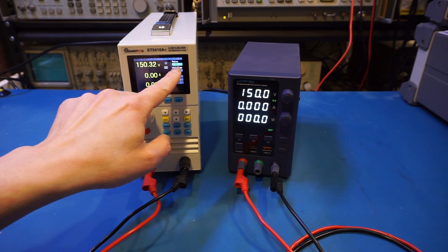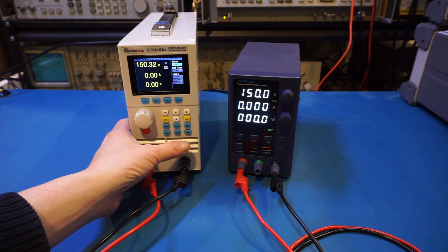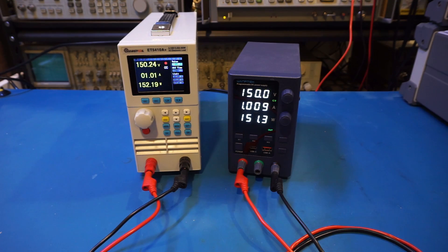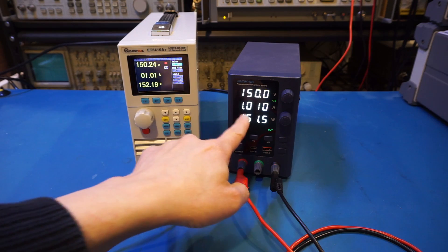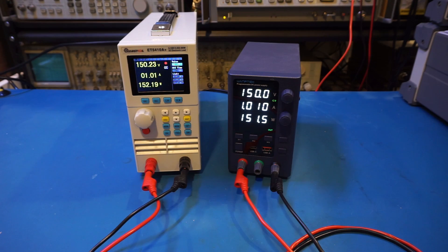By the way, I've already set it to draw 1A. So let's power it on. And you can see that we're drawing 1A, and here it's showing 1A as well. Everything seems to be working correctly.